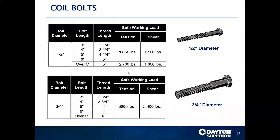Coil bolts — looking at half inch and three quarter inch: half inch is 1,650 pounds in tension for shorter lengths, up to about 2,700 pounds for longer lengths, but only 1,800 in shear. Typically you are always looking at a minimum 30% reduction in shear from the tension load for that same coil product.